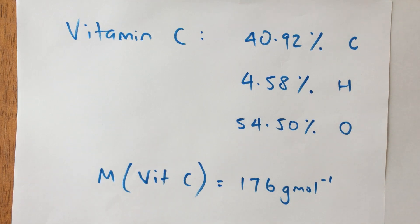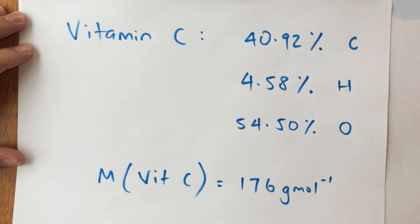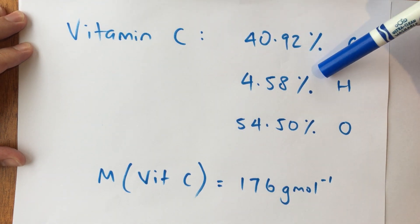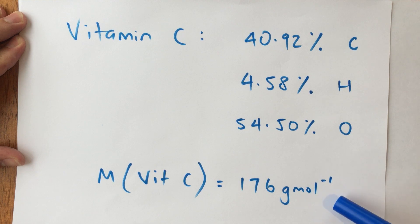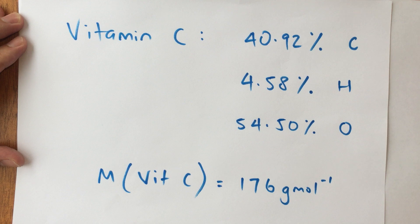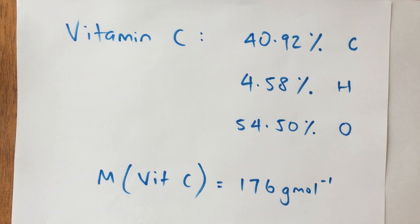Hi again, Year 12. Mr. Venord here. We're going to work through a problem where we're given the percentage composition and work our way through to empirical formula and molecular formula. The data given is that vitamin C has a percentage composition of 40.92% carbon, 4.58% hydrogen, and 54.50% oxygen. We've also been told that the molar mass of vitamin C is 176 grams per mole, and from this information we need to find the empirical and then the molecular formula of vitamin C.